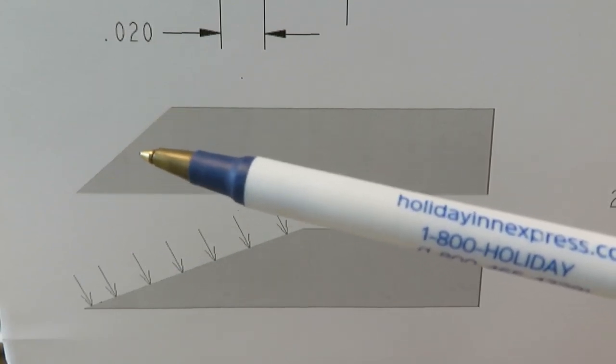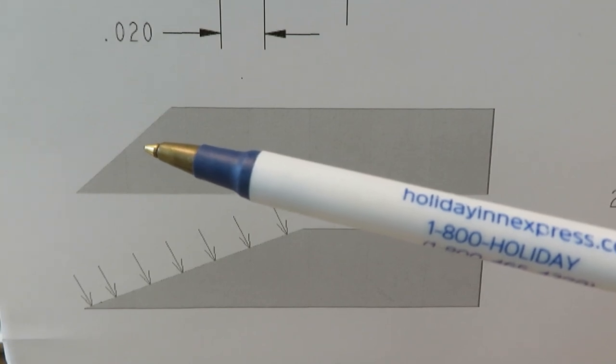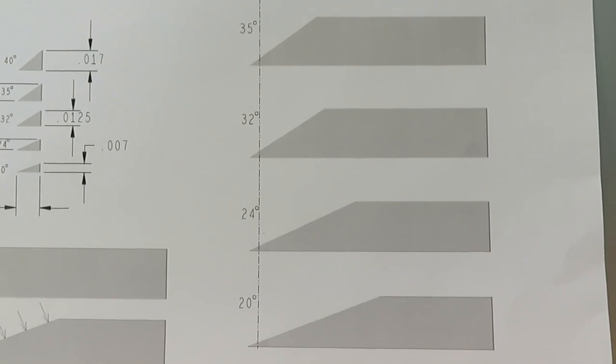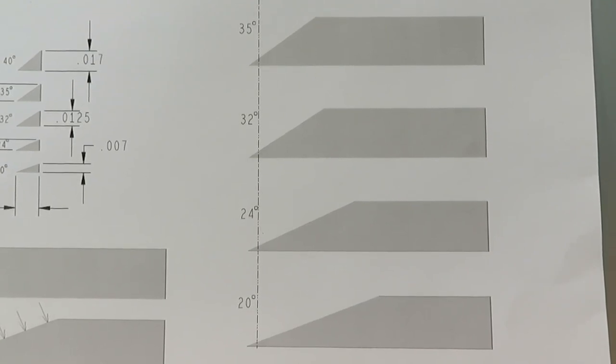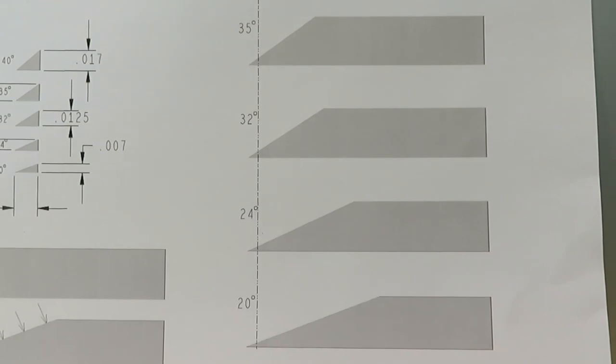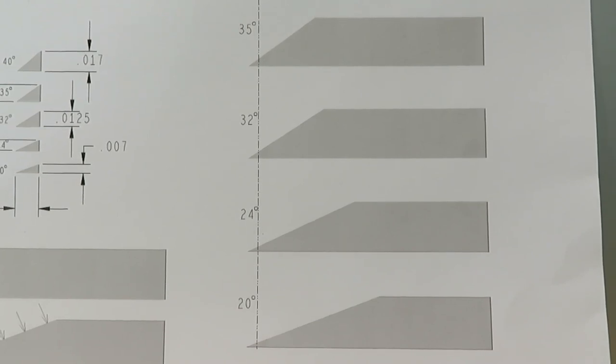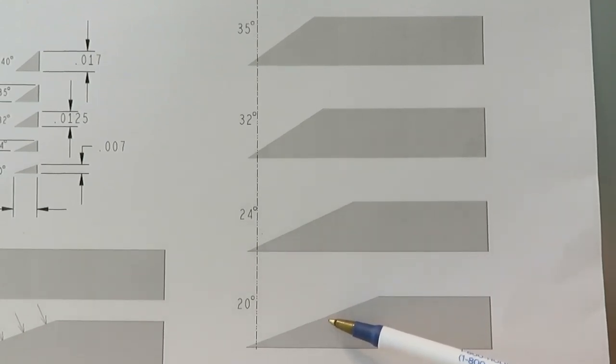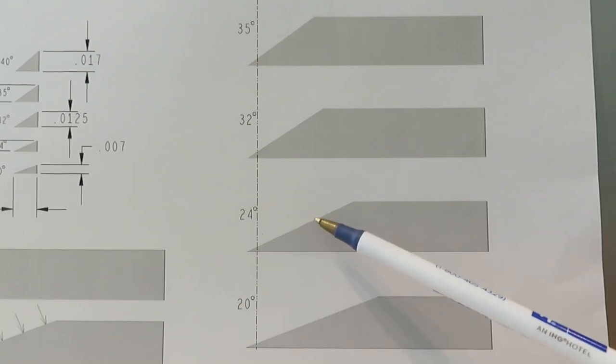Broadhead makers are all doing something a little bit different. There is a real effect on their choices. Here you'll see a 20-degree bevel—that's the head I'm evaluating now. Here's 24-25 degrees, that's where Cutthroats are.